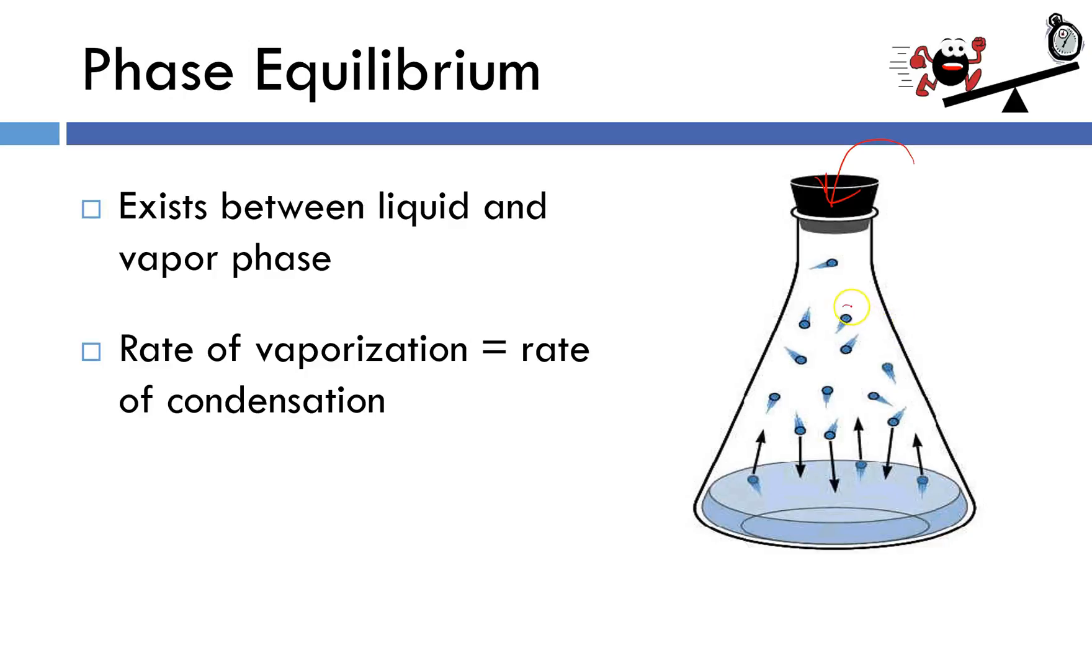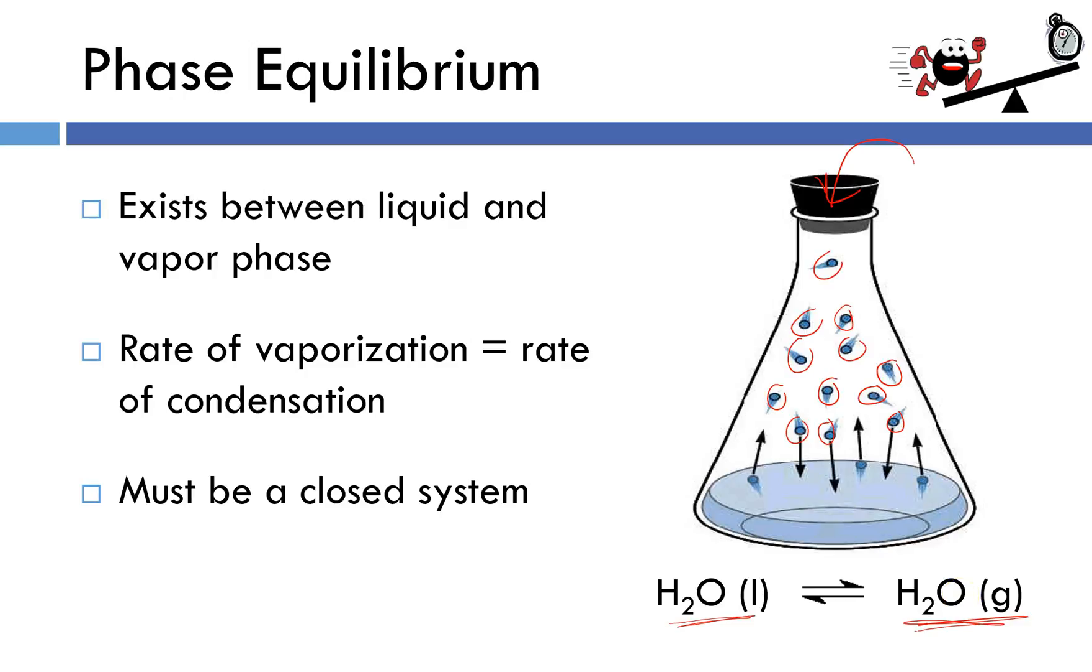So if those rates are equal, that means that the total number of particles in the vapor phase is going to stay constant. So from an outside perspective, vapor pressure would remain constant and it would look like nothing was changing. But if we could see down on the molecular level, we'd see that some of the gas particles were condensing, some of the liquid particles were evaporating, and that both processes were occurring at the same rate. If I wanted to express this in a chemical equation, I might write something like this. H2O liquid is in a reversible reaction with H2O gas. It doesn't really matter whether I put the liquid on the reactant side or the product side.